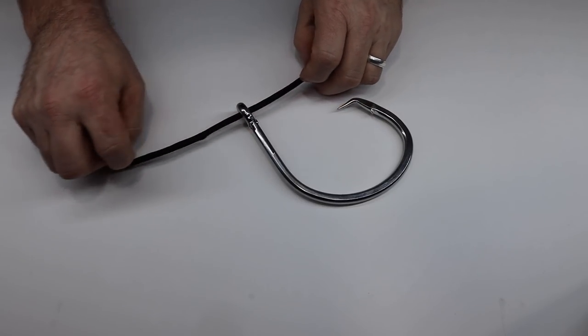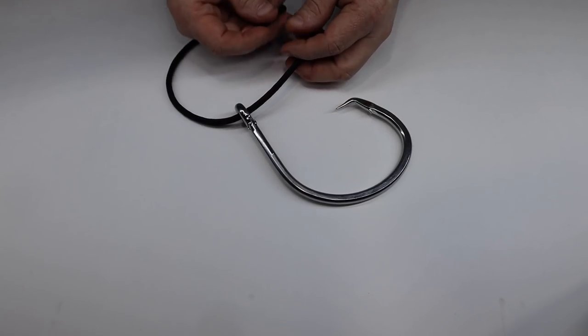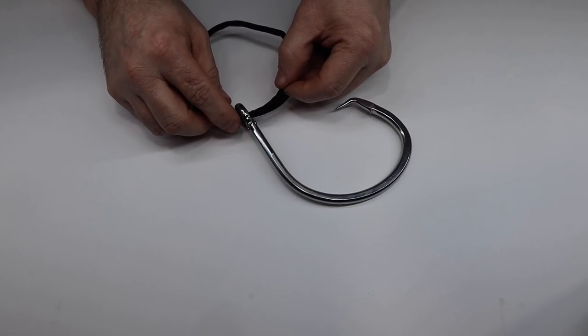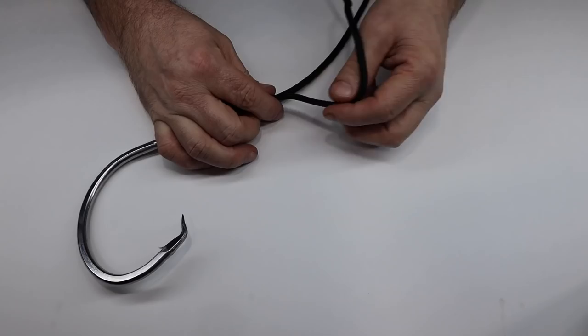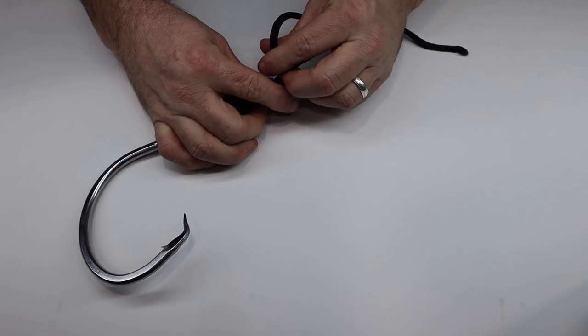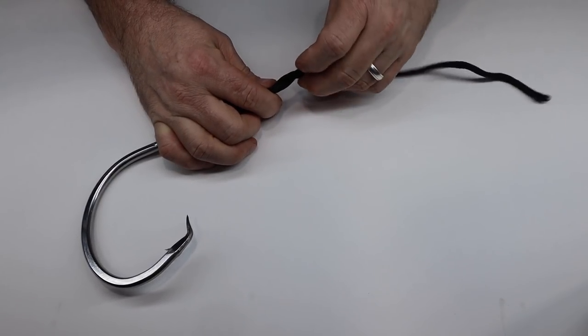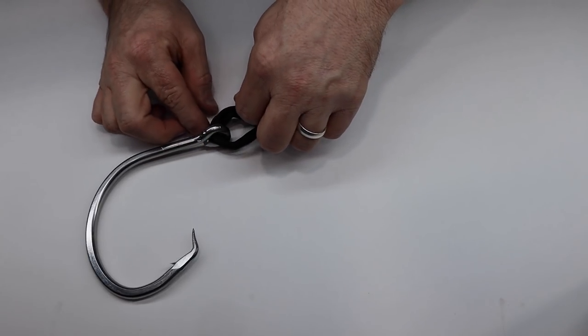On a fisherman's knot, you want to run the end of the line through your hook. I like to run it through twice like a Palomar knot and make a loop. Then you twist it down your line at least five times. Bring the end of your line back through that loop and cinch it all down.